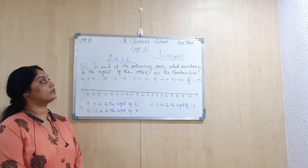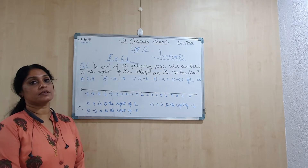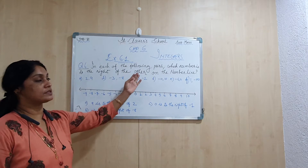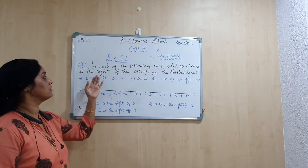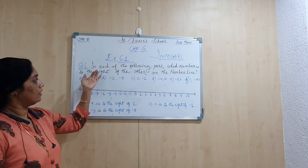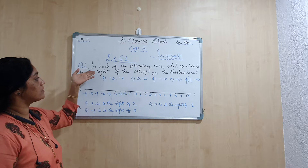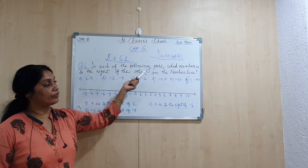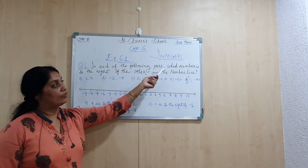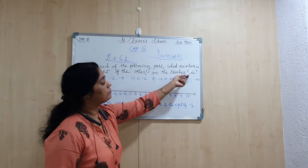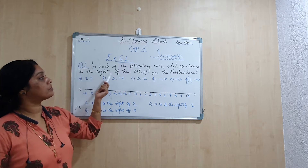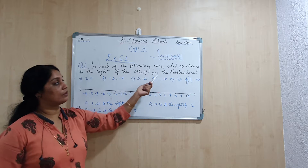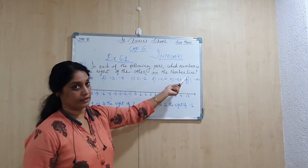Now children, in question number 6, practice exercise 6.1, chapter Integer, let's read the instruction of question number 6: 'In each of the following pairs, which number is to the right of the other on the number line?'